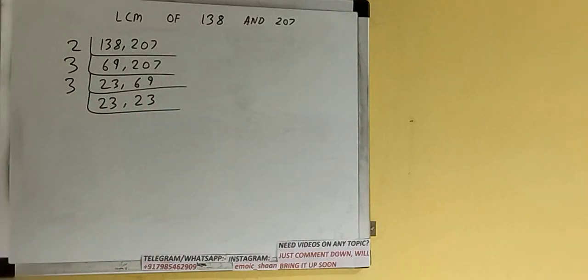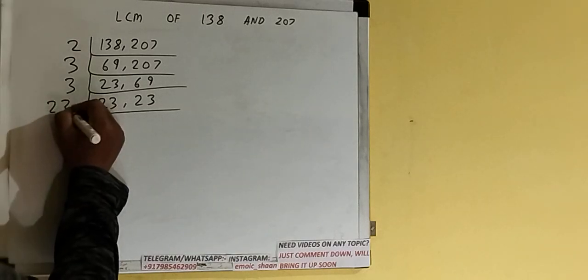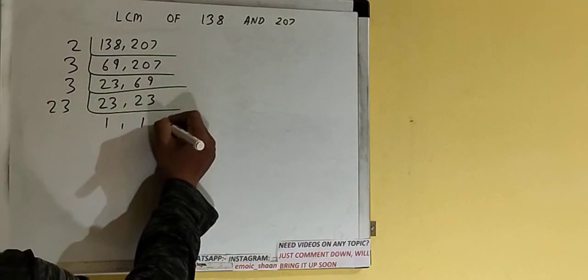Now if we check, the numbers are not divisible by 3. If you see, the number 23 is a prime number, which means it is only divisible by itself. So once we divide by 23, you'll be having 1, 1.